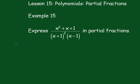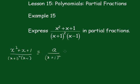Now there are a couple of ways of doing this. I'll show you the first method. Write this as x squared plus x plus 1 over x plus 1 all squared times x minus 1, which can be written as A over x plus 1 all squared plus B over x plus 1 plus C over x minus 1. This is a polynomial of degree 1 over a polynomial of degree 2 when put over a common denominator of x plus 1 all squared.